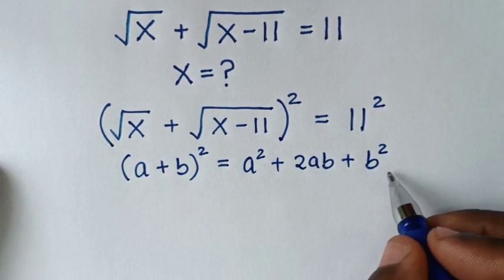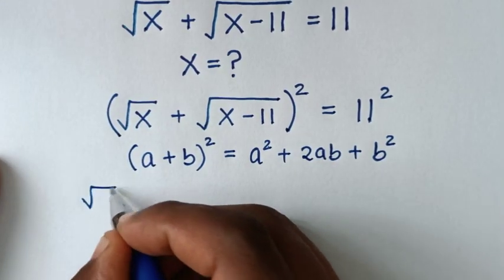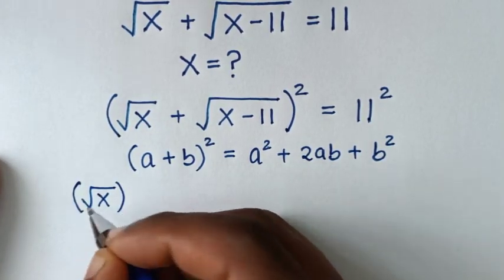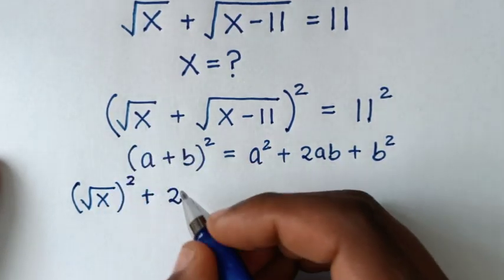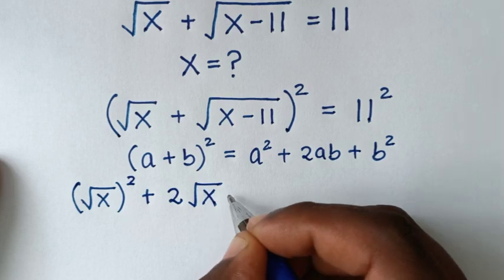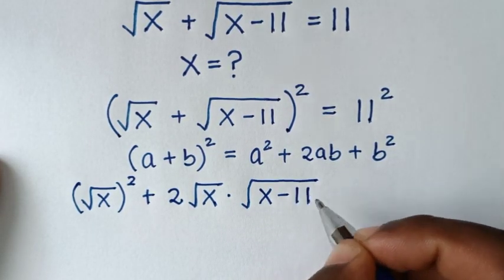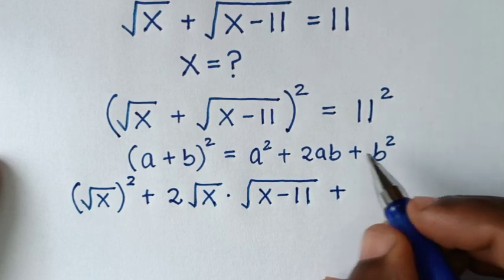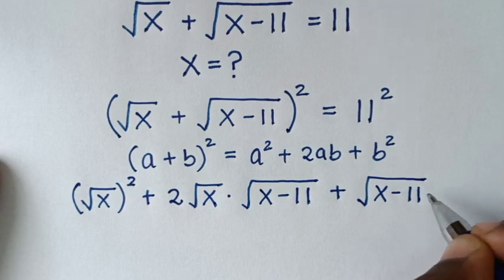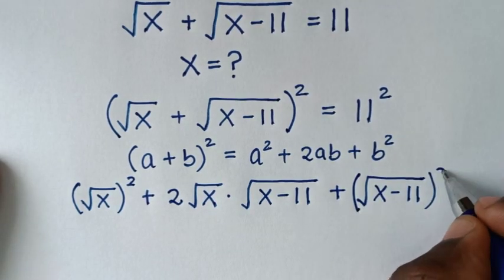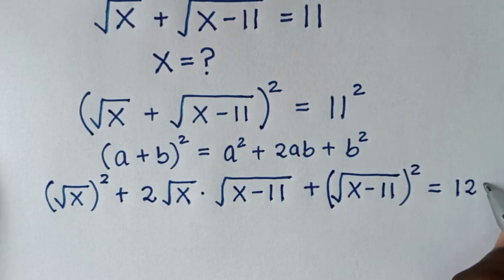We apply this form: a² will be (√x)², then plus 2ab which is 2 times √x times √(x−11), then plus b² which is (√(x−11))², and this is all equal to 11² which is 121.